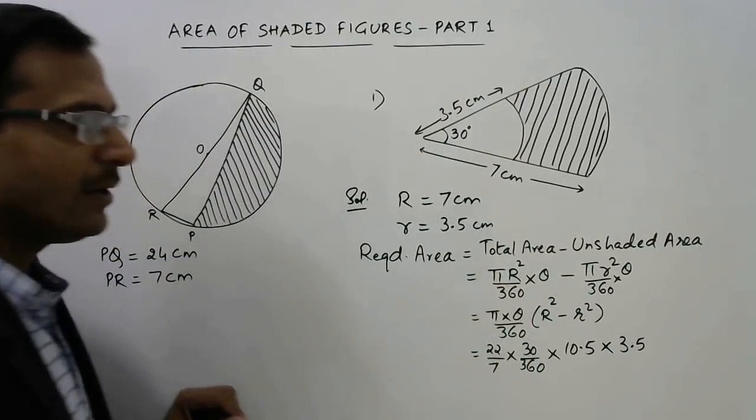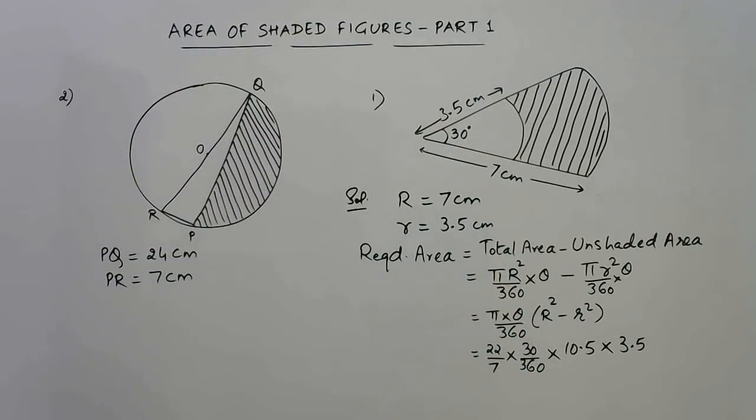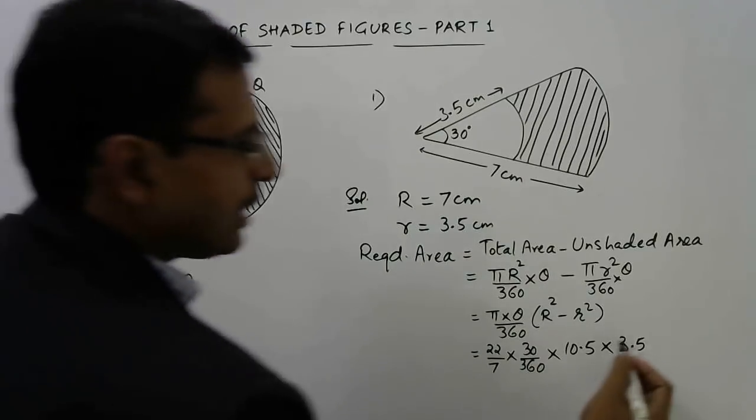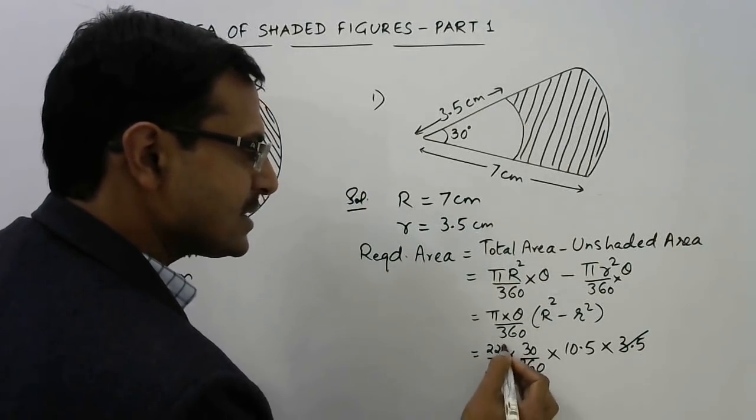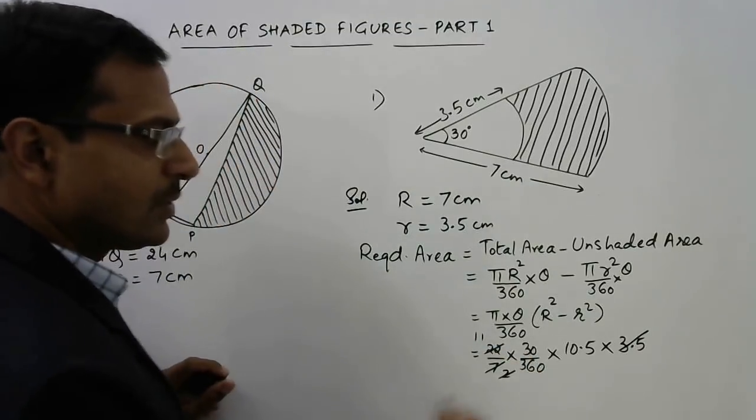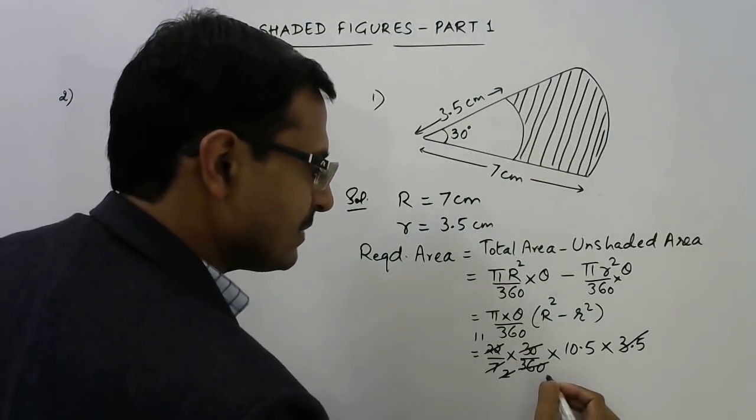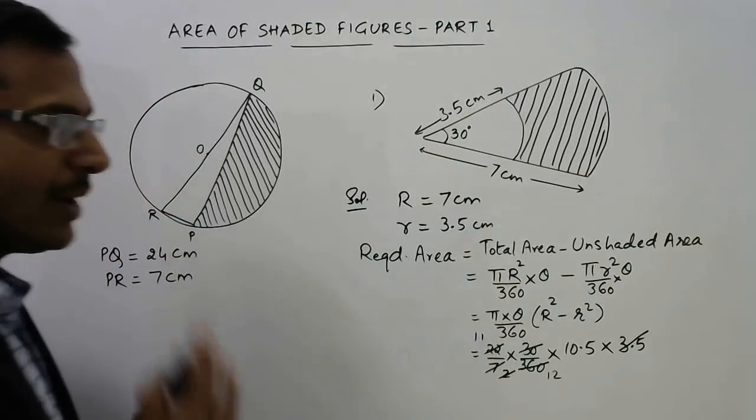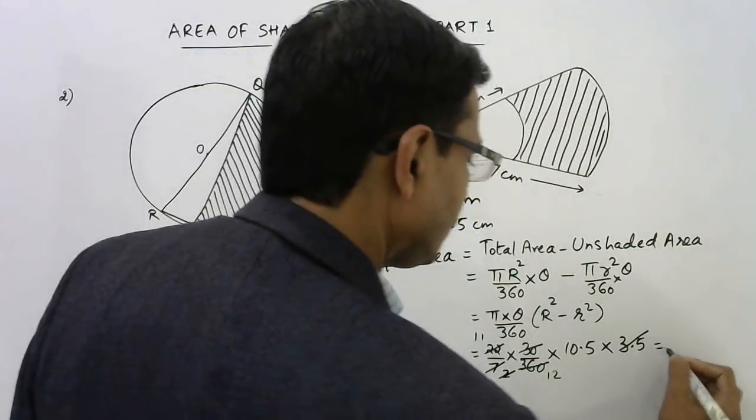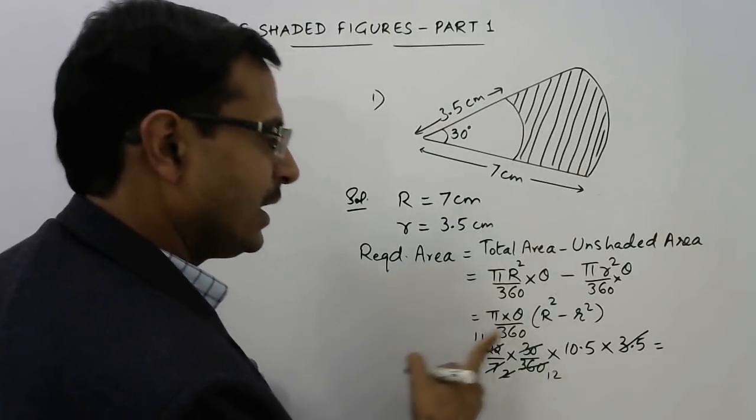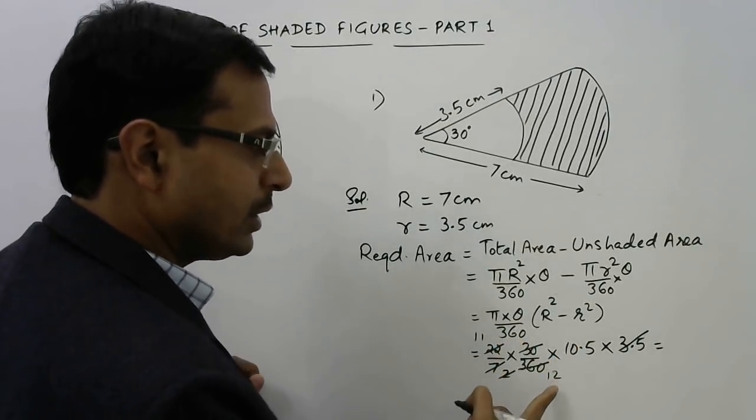Instead of squaring both independently we will use the identity here, that will simplify our problem. So 3.5 cancels exactly 2 times, and 2 cancels with 11. 30 cancels 12 times. We will leave this 12 as it is and solve the remaining part.